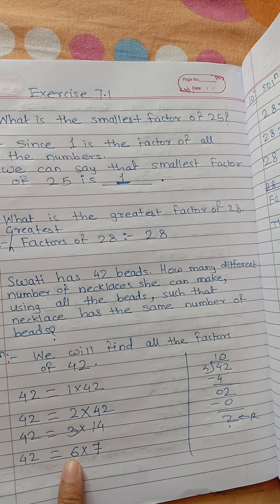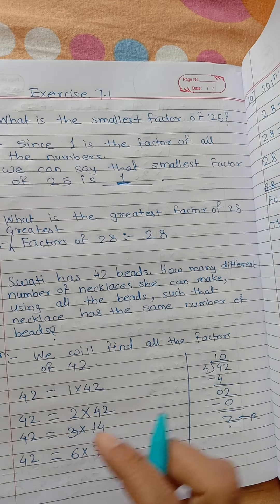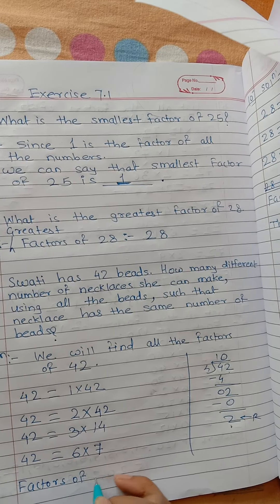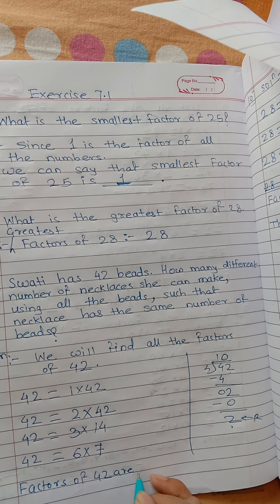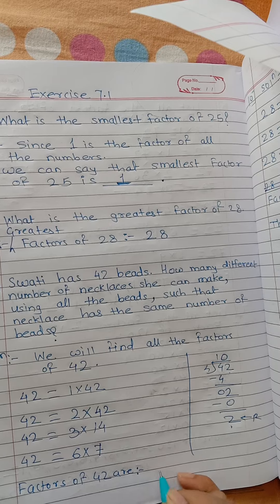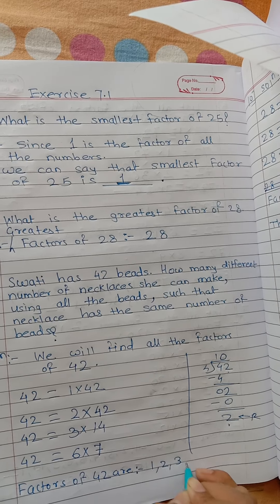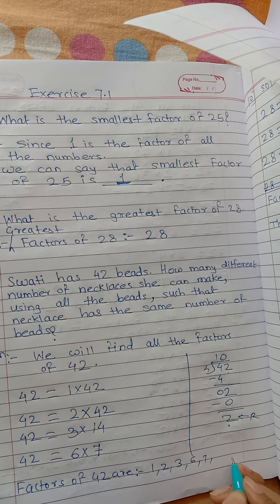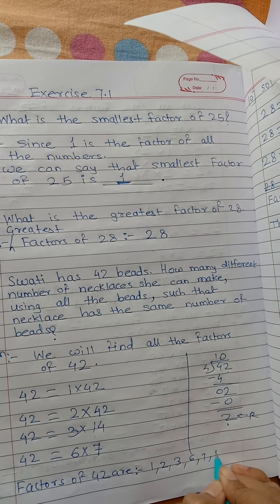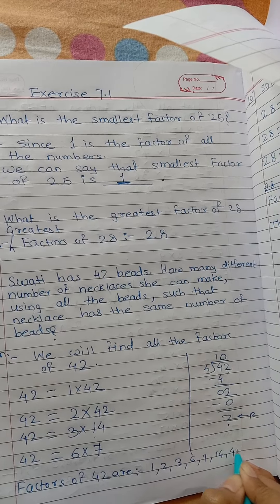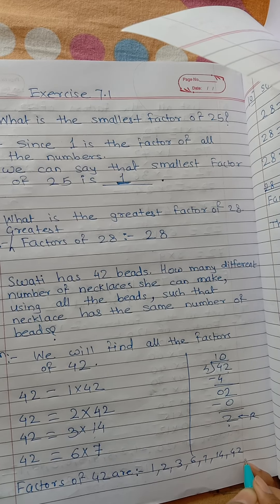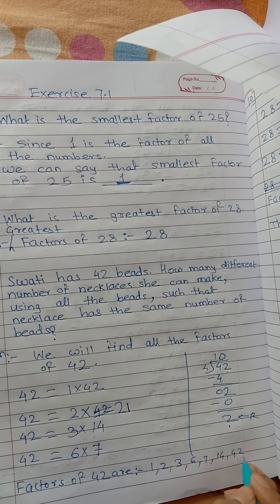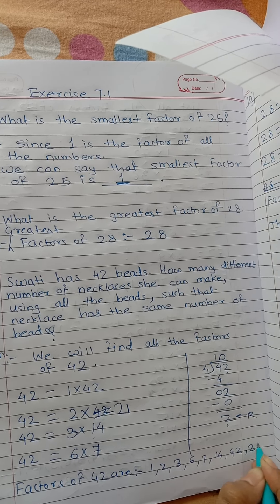So the factors of 42 are: 1, 2, 3, 6, 7, 14, 21, and 42.